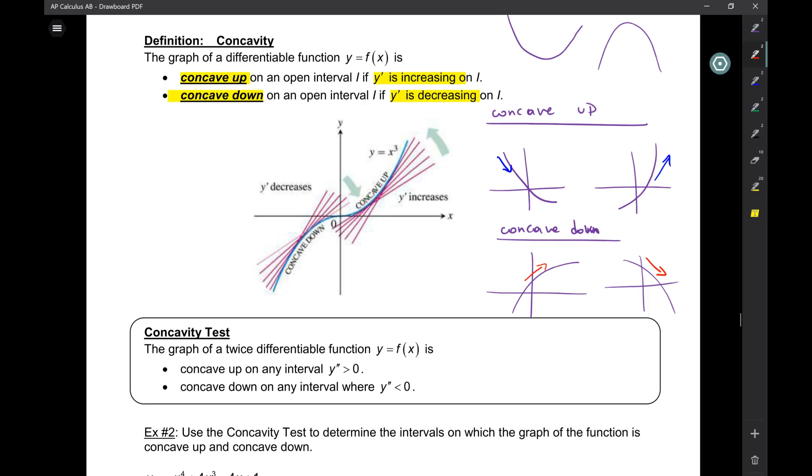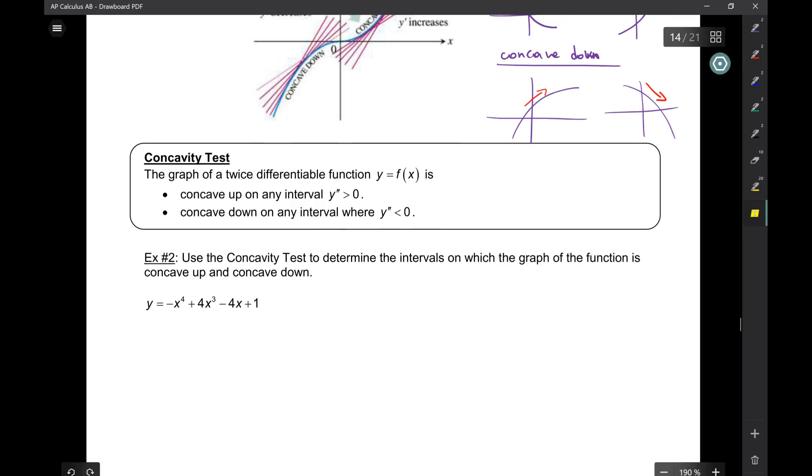Yes. So, here is the concavity test. A graph has to be twice differentiable. What does that mean? You can take a derivative, and then you can take a derivative again. So, the graph of a twice differentiable function, it's concave up if y double prime is positive. So, remember how we were doing this for f prime? We take another derivative and we do this for f double prime. And then it's concave down whenever y double prime is negative.